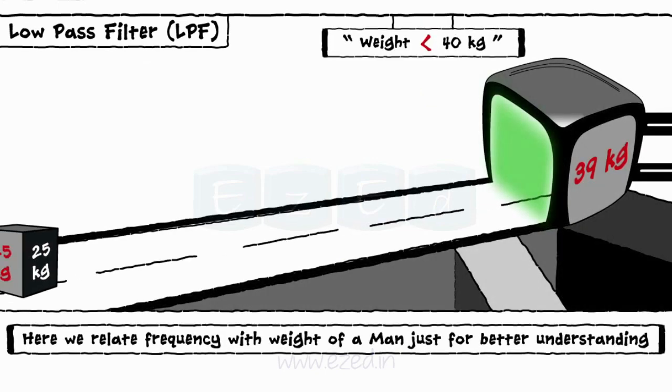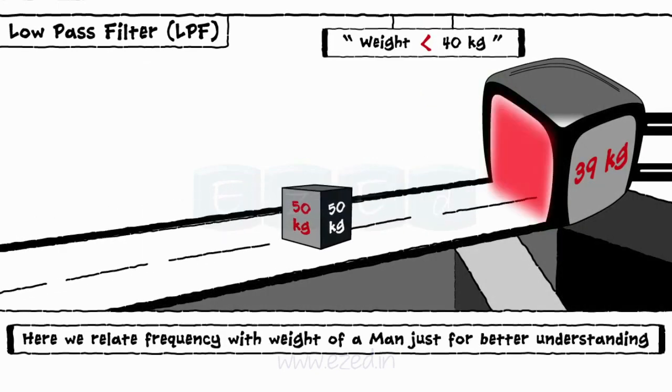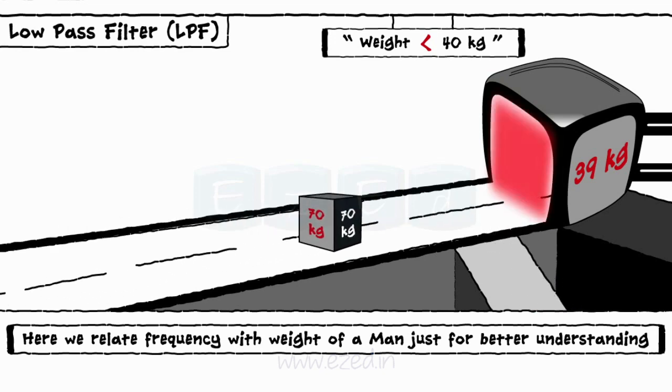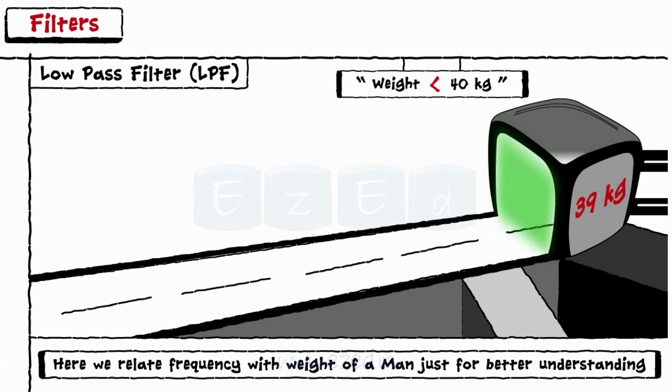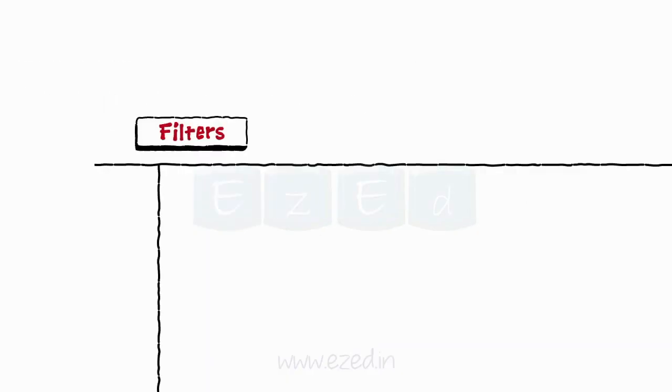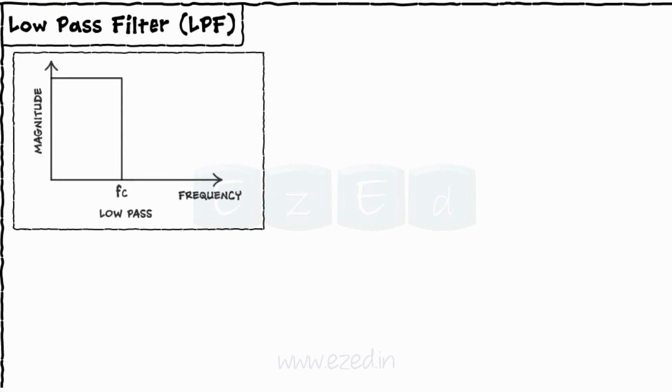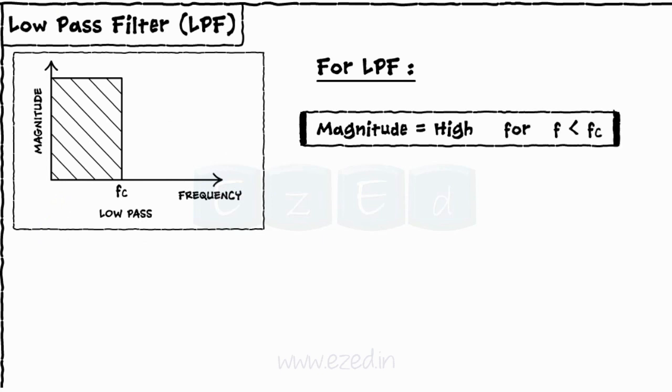Let's start with the low pass filter. As the name suggests, this filter passes low frequency signals through the circuit and blocks all high frequency signals. For every filter, a threshold frequency is decided which is known as cutoff frequency.